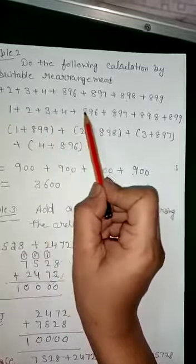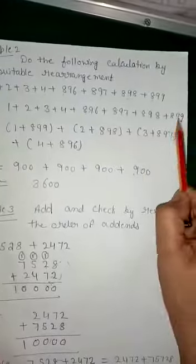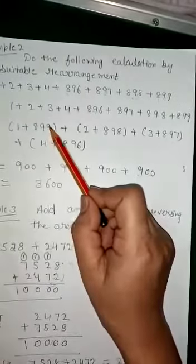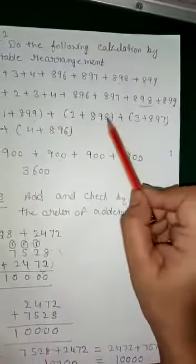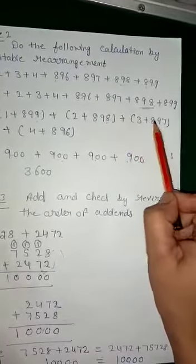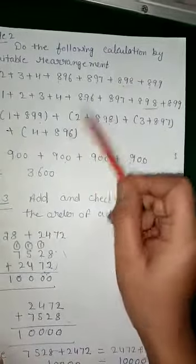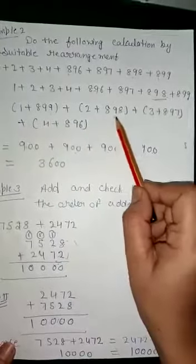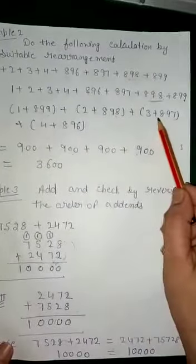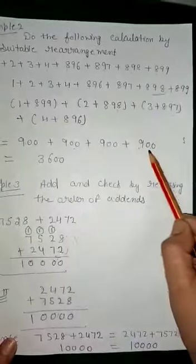We group the numbers into pairs: Group 1: 1 + 899 = 900. Group 2: 2 + 898 = 900. Group 3: 3 + 897 = 900. Group 4: 4 + 896 = 900. Each group sums to 900.